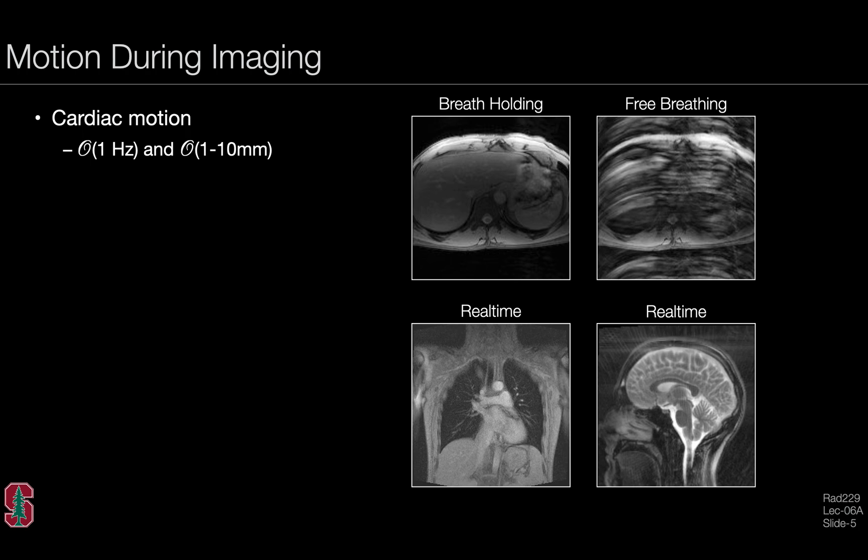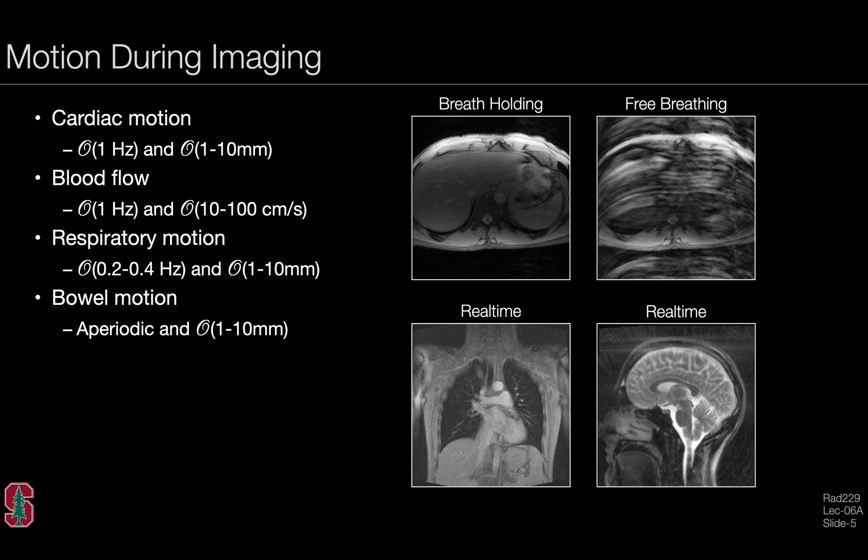In imaging, we encounter cardiac motion, that's on the order of about a hertz and spans something like one to 10 millimeters of motion displacement. We also have blood flow, on the order of about a hertz, spanning about 10 to 100 centimeters per second. There's many different kinds of underlying motion, including respiratory motion, bowel motion, patient motion, and swallowing. When imaging a particular target territory, it's very likely that there will be moving tissues or motion in the field of view. If not appropriately accounted for, this can lead to imaging artifacts.